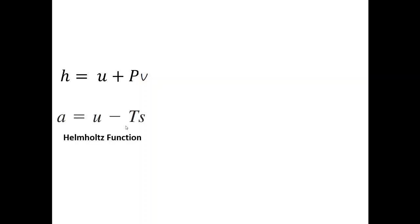Now let us look at the thermodynamic background. We will be using internal energy U and enthalpy H. We also define two more properties: the Helmholtz function A = U - TS, where U is internal energy, T is temperature, and S is entropy; and the Gibbs function G = H - TS. We will derive four Maxwell equations, one from each of these four thermodynamic functions.